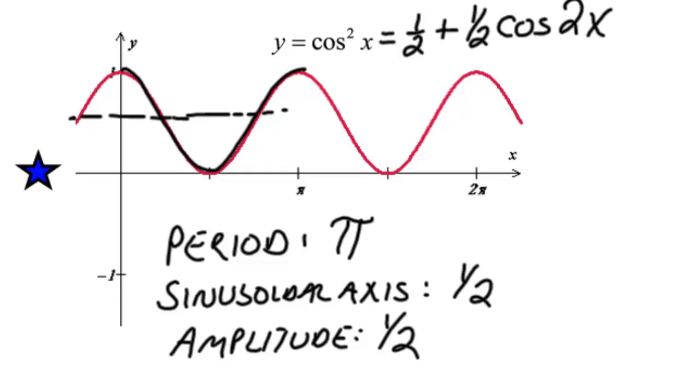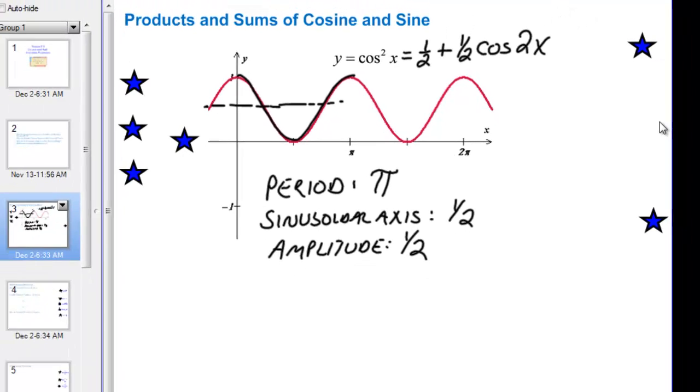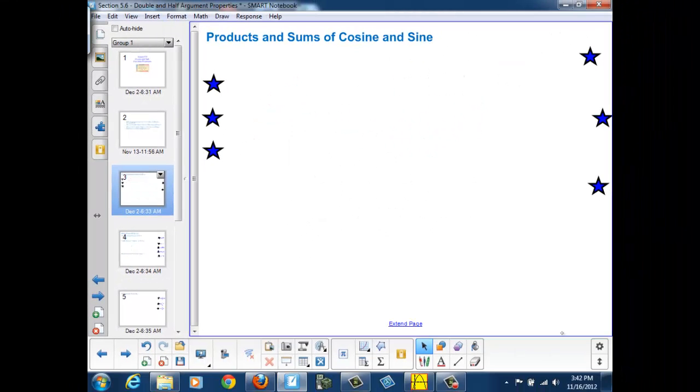Since our period is half of what it was originally, we have a sinusoidal axis of 1 half, and an amplitude of 1 half. Finally, let's look at the sine squared of x graph.